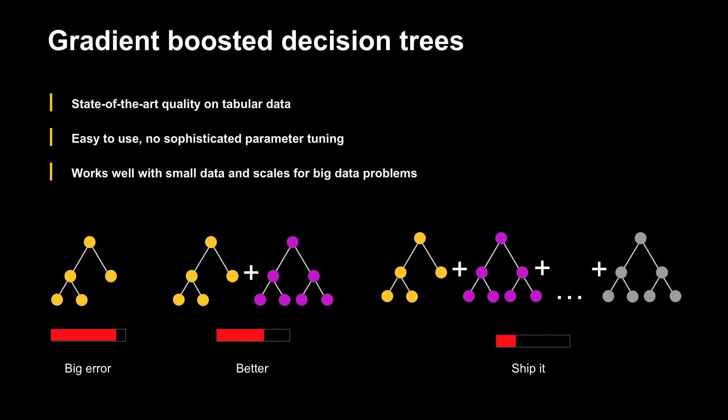Gradient boosting on decision trees is a technique that is very easy to use, and it has a really small number of parameters that you have to tune manually to achieve good quality. For GBDT, it is often enough to use just three parameters: a maximum depth of the tree, a number of trees you want to train, and a learning rate. You can spend the rest of the time working with the data, not with hyperparameter tuning. Gradient boosting works well on small datasets and scales well to big ones. This method allows you to accurately check and avoid overfitting by looking at the loss function values on a validation set and stopping training when it stops improving, or even cutting some trees from your model after training.